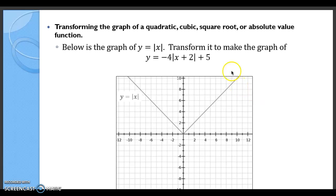Below we're given the graph of y = |x|. Transform it to make the graph of y = negative 4 times the absolute value of (x plus 2) plus 5. So the negative 4 will do something, and actually the negative will do something on its own. The plus 2 will do something and the plus 5 will do something.